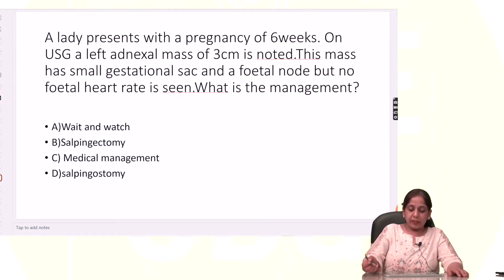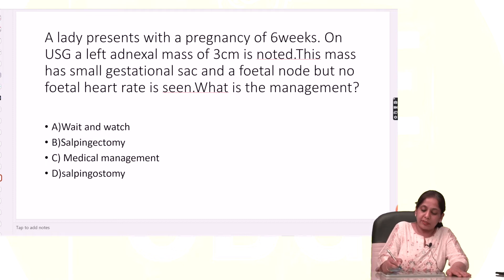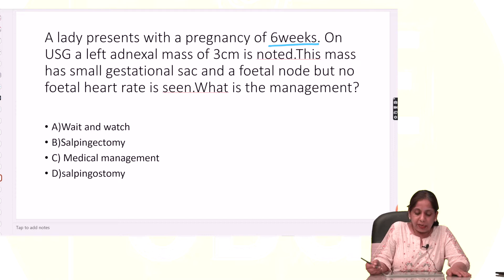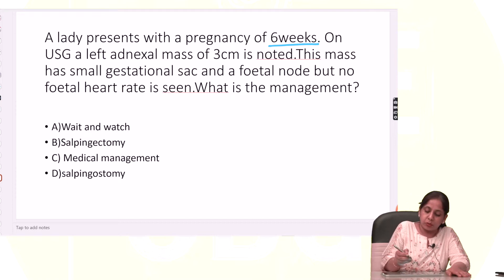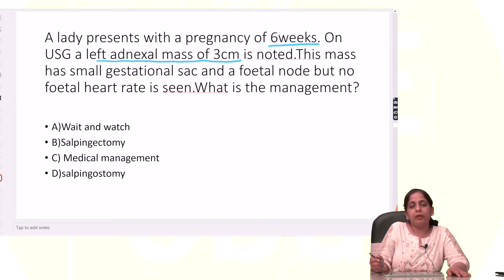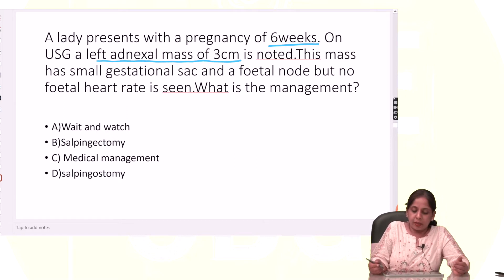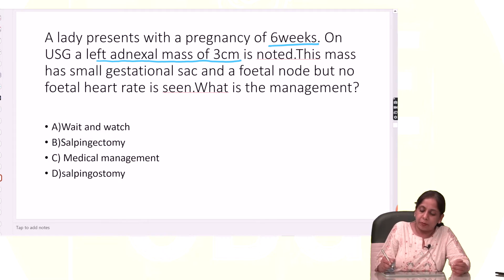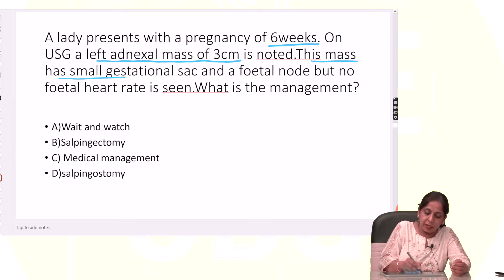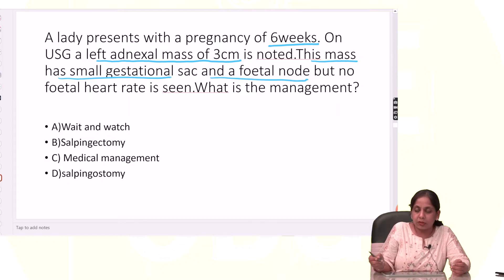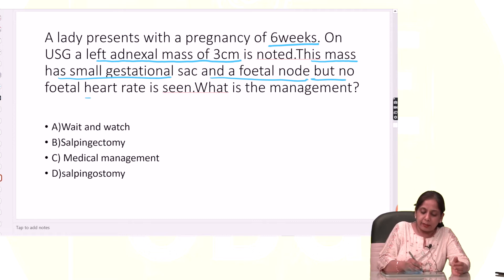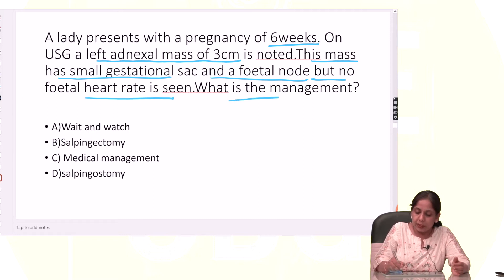A lady presented with pregnancy of 6 weeks, so it is in early pregnancy. On ultrasound, a left adnexal mass of 3 cm is noted. It can be a case of ectopic pregnancy — tubal ectopic. This mass has a small gestational sac and a fetal node, so it is a final confirmation that it is a tubal ectopic. But no fetal heart rate is seen.